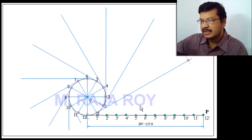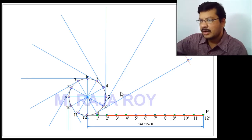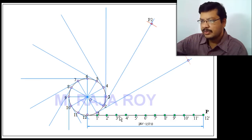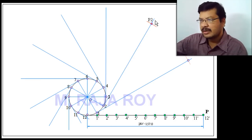Next, take P-to-2-dash as radius and point 2 as center, then draw an arc onto the tangent at point 2. This gives point P2. Using the P-to-2-dash distance as radius with point 2 as center, I have drawn the arc, and this point P2 is the second point on the involute.